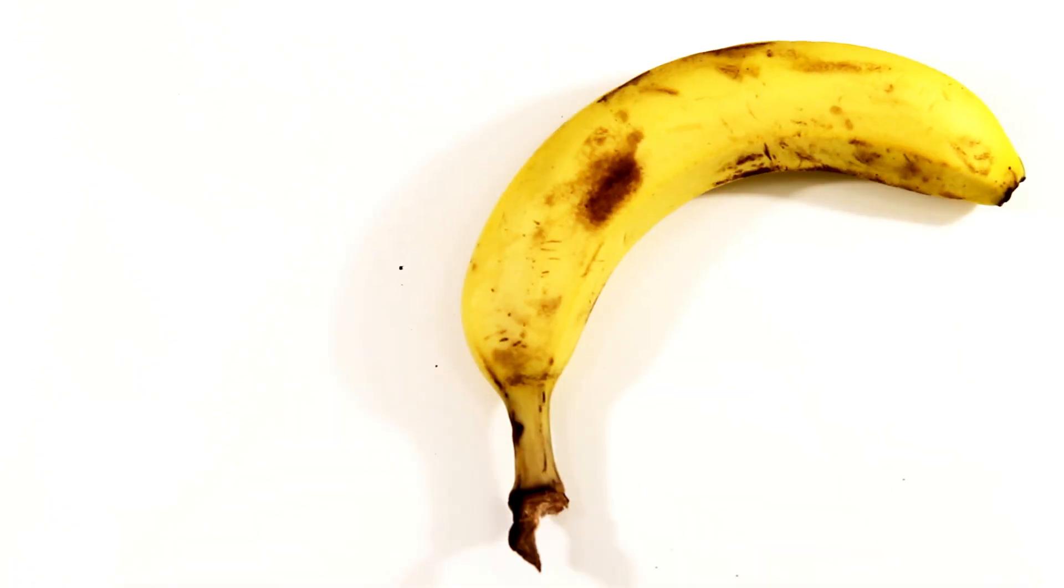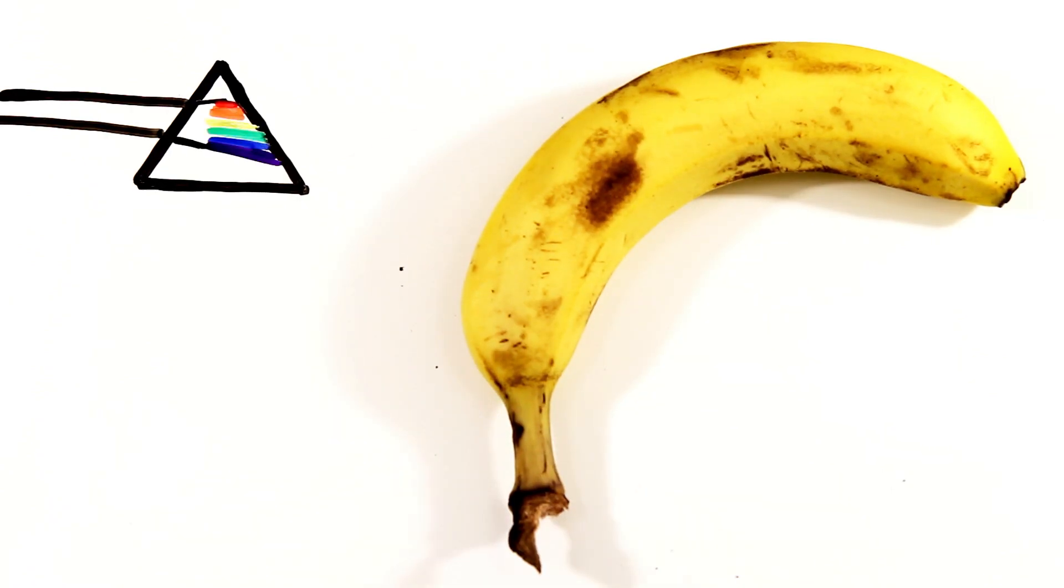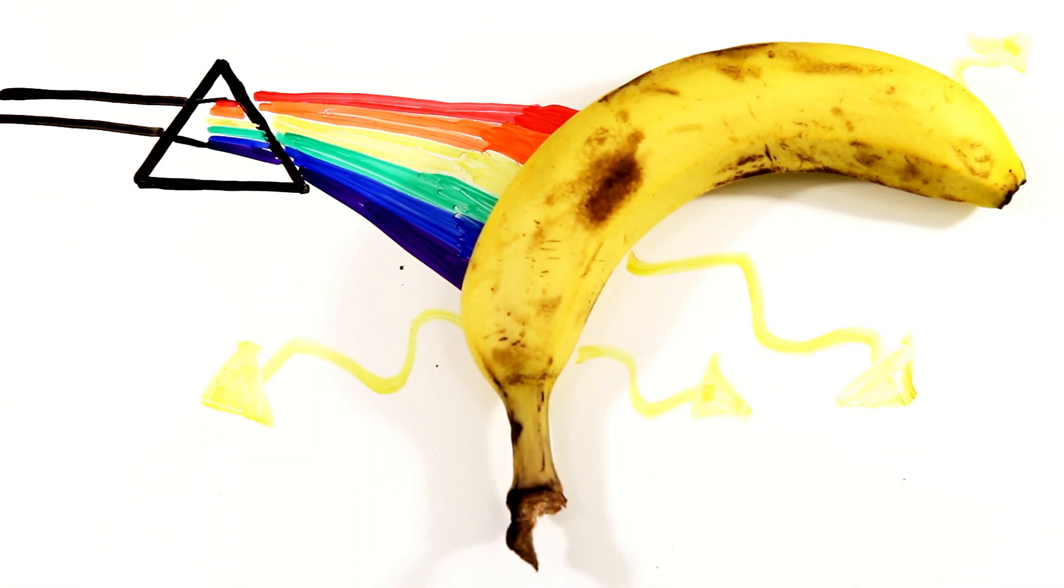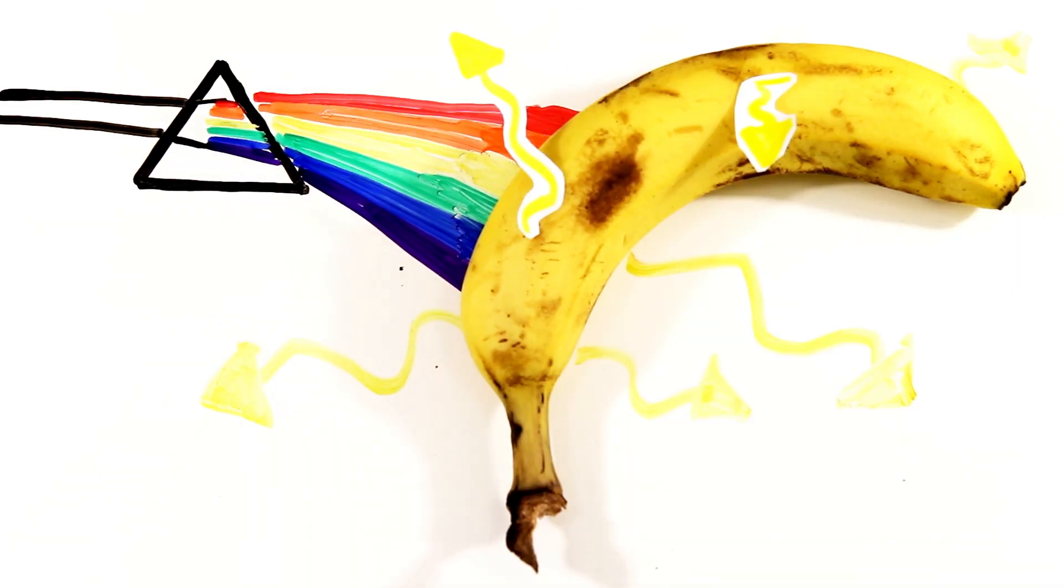For example, when you hold a yellow object in real life, it's actually absorbing every wavelength except yellow. That yellow light bounces back and hits your eyes.